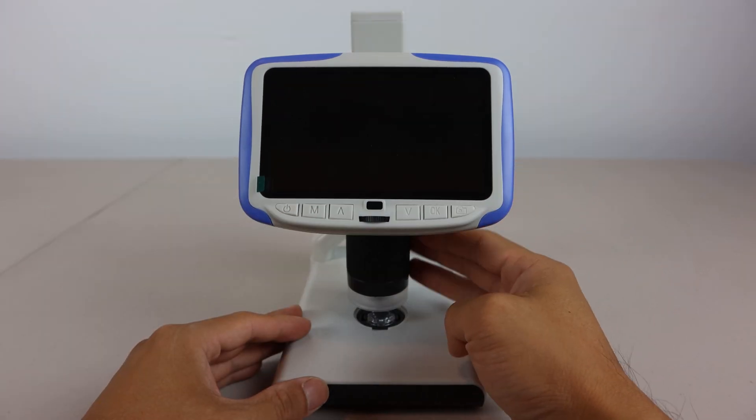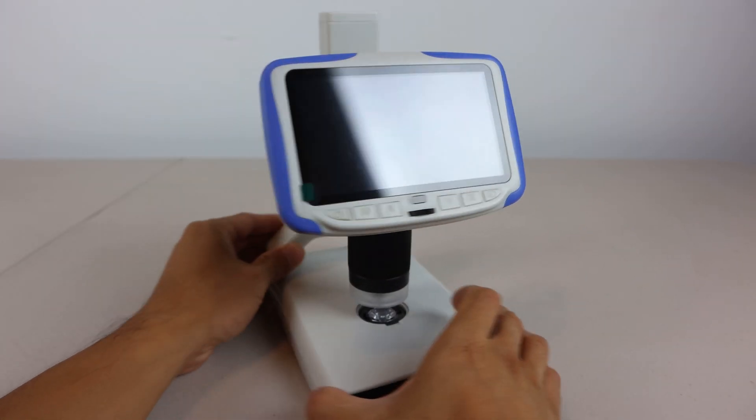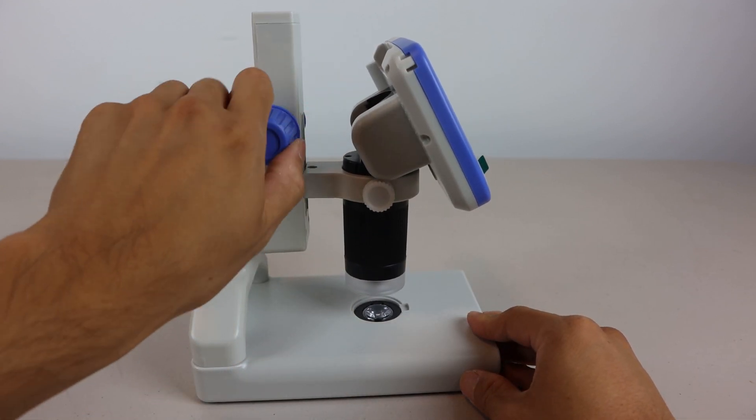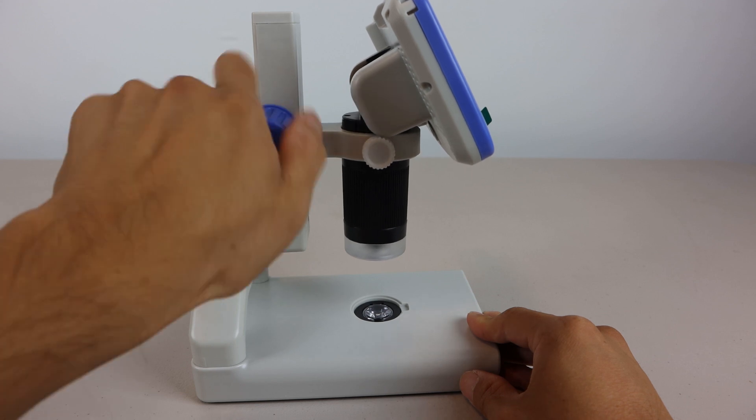Just under the screen, this black tube is the focus controller for the lens. The large blue knobs control the height of the lens, which can move up and down about 2 inches.